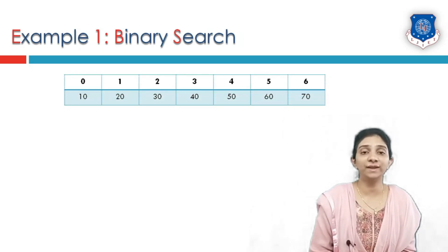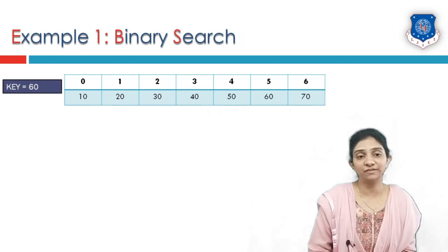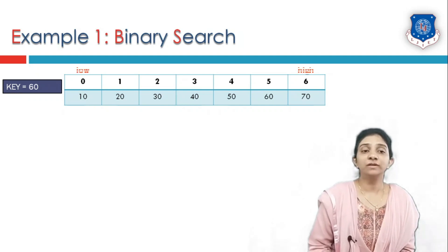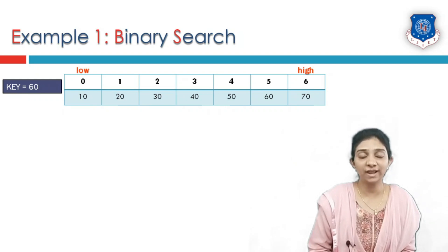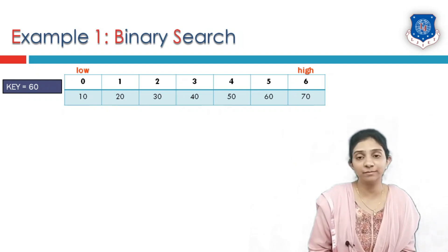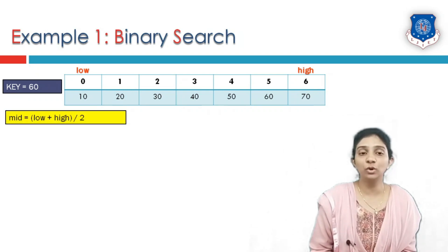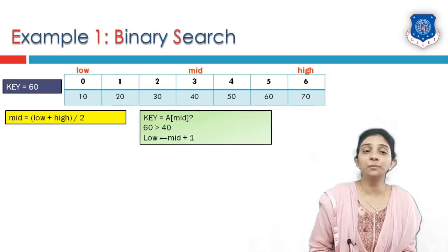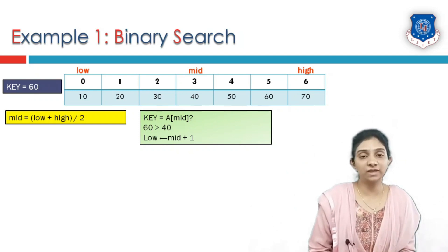Let us take one example and see how binary search works. This array comprises seven elements and the key element is 60. Note that the elements are already sorted, which is the precondition of binary search. We first initialize: low index points to element at index 0, and high index points to element at index n−1, which equals 6. We then calculate mid as (low + high) / 2, which is (0 + 6) / 2 = 3, so mid index is at index number 3.